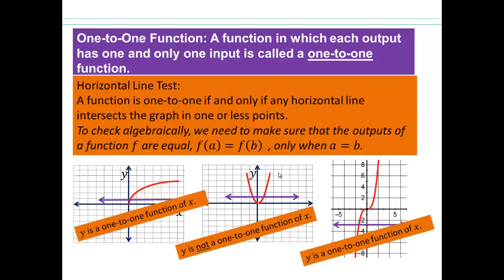So to check algebraically, in case you don't have a graph, what does that mean? Function is one-to-one, then what do we want to make sure? We want to make sure that the outputs of a function are equal only when the inputs are equal. So one output should only have one input. One output cannot have two inputs. Then it would no longer be a one-to-one function.